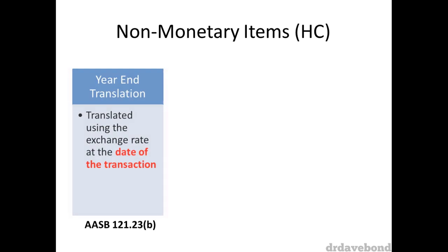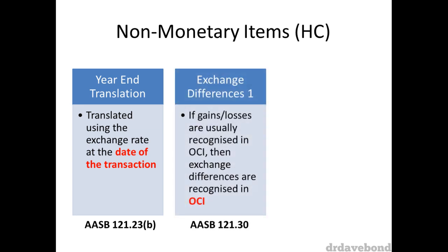We'll look at historic cost non-monetary items first. These are translated using the exchange rate at the date of the transaction, for example when they are purchased or impaired. If gains or losses are usually recognized in OCI, then exchange differences are also recognized in OCI.